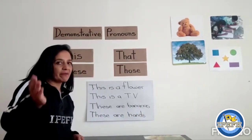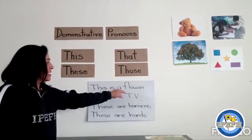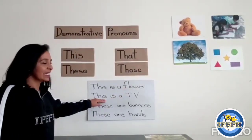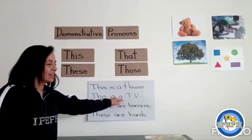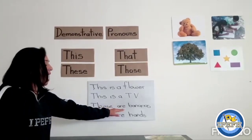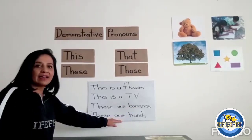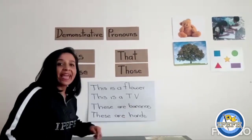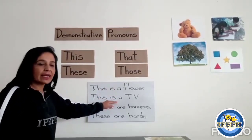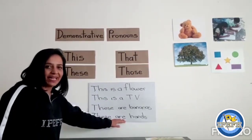Okay guys, everybody let's read aloud: this is a flower — a lot of boys and girls, I can hear you — this is a TV, these are bananas, these are hands. Excellent. Pay attention: examples one and two are for singular, and these examples are for plural.